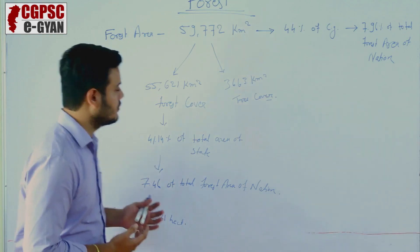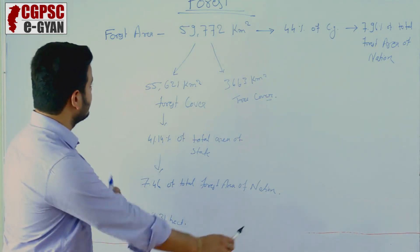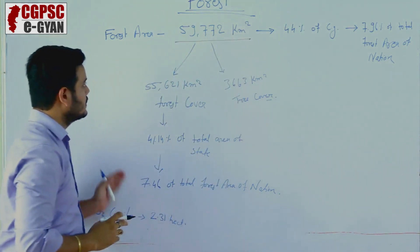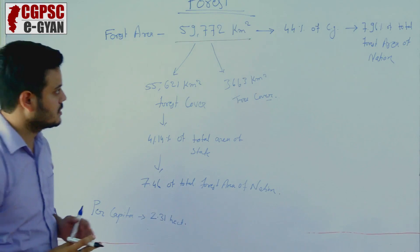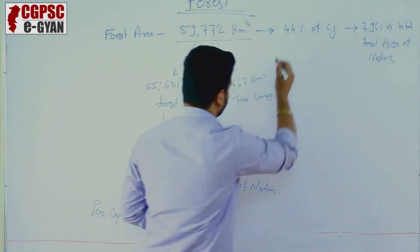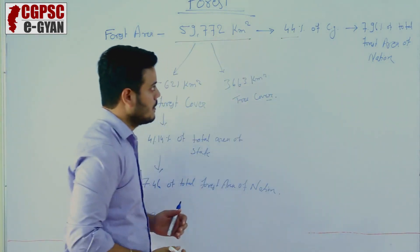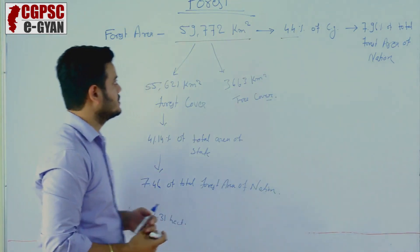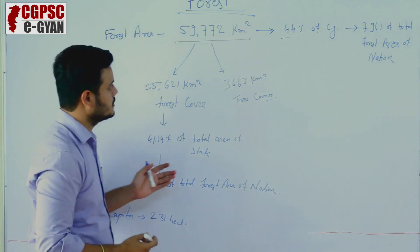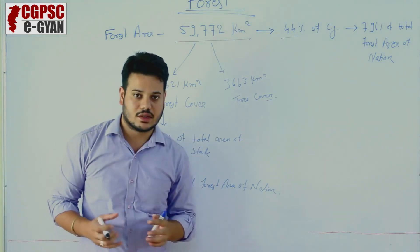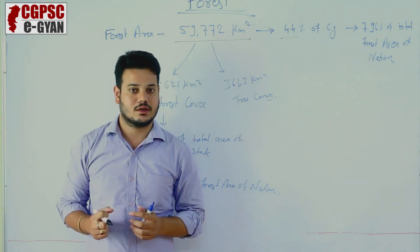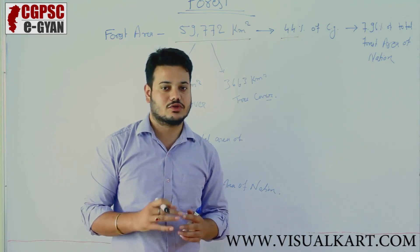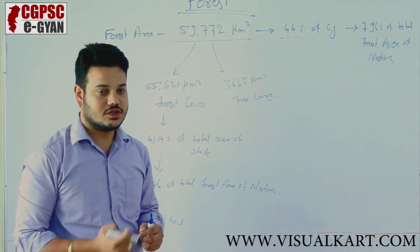Now we will see the total forest area. The total forest area of Chhattisgarh is 59,772 km², which is 44% of the total area of Chhattisgarh and 7.96% of the total forest area of the nation.